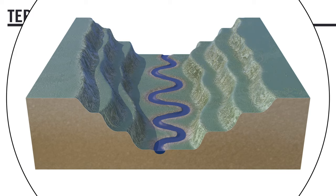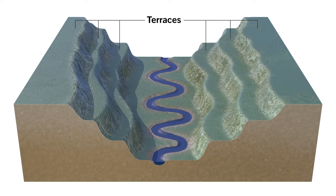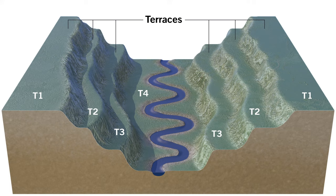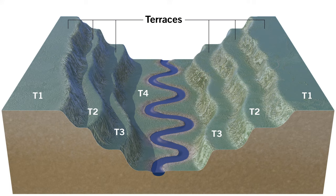The abandoned floodplains that are now above the present river channel are called terraces. By studying terraces and their ages, geologists can determine the history of a river and how it may have responded to changes in base level through time.